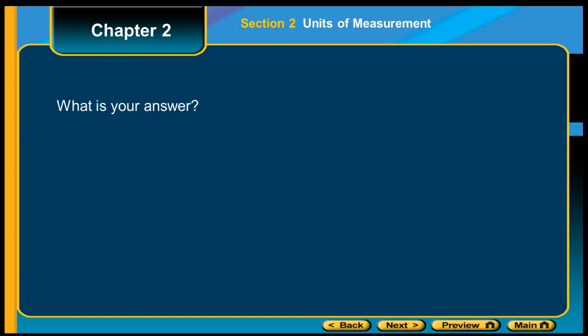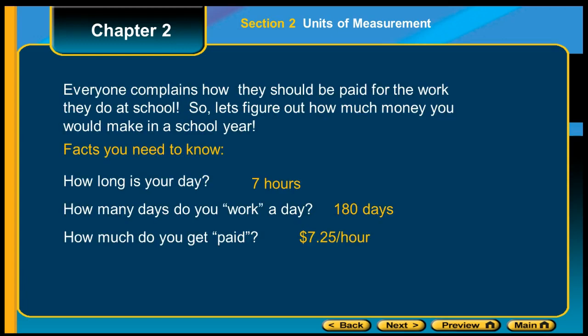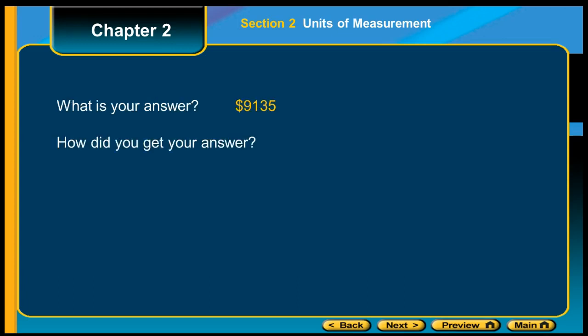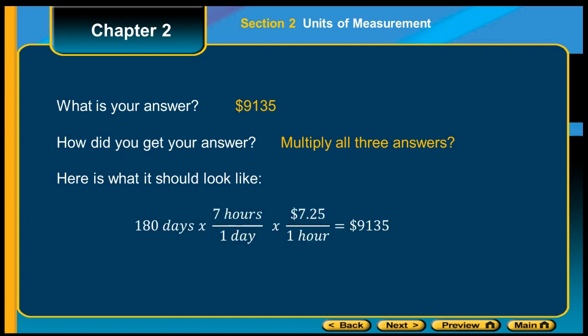What would your answer be? If you took your seven hours for 180 days of work times your $7.25 an hour, what's your answer? Well, if you did the math, you probably got $9,135. But how did you get that answer? You multiplied all three answers. Here's what it should look like: if you take your 180 days times your seven hours a day times your $7.25 an hour, you get $9,135.